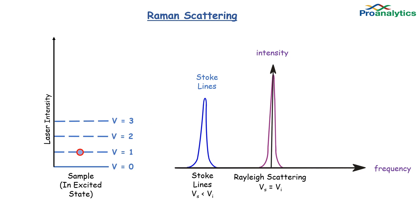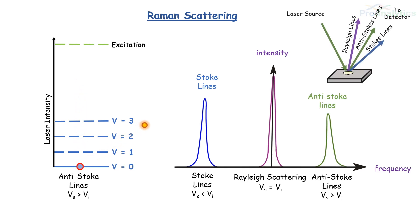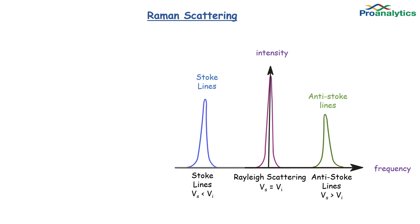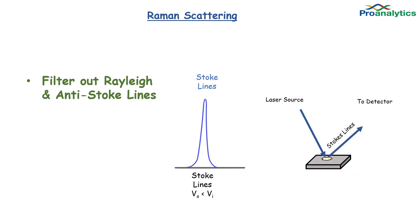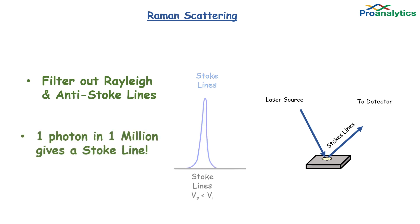The third Raman profile is the anti-Stokes line. In these cases, the sample is already in an excited state — for example, the sample could be heated and the molecules are already at V1. The light is scattered with more intensity once the sample has reached the ground state, so Vs is greater than Vi. Raman instruments filter out the Rayleigh and anti-Stokes lines, leaving just the Stokes lines. It's a rare event where just one photon in a million gives a Stokes line, so your laser source needs to be strong.